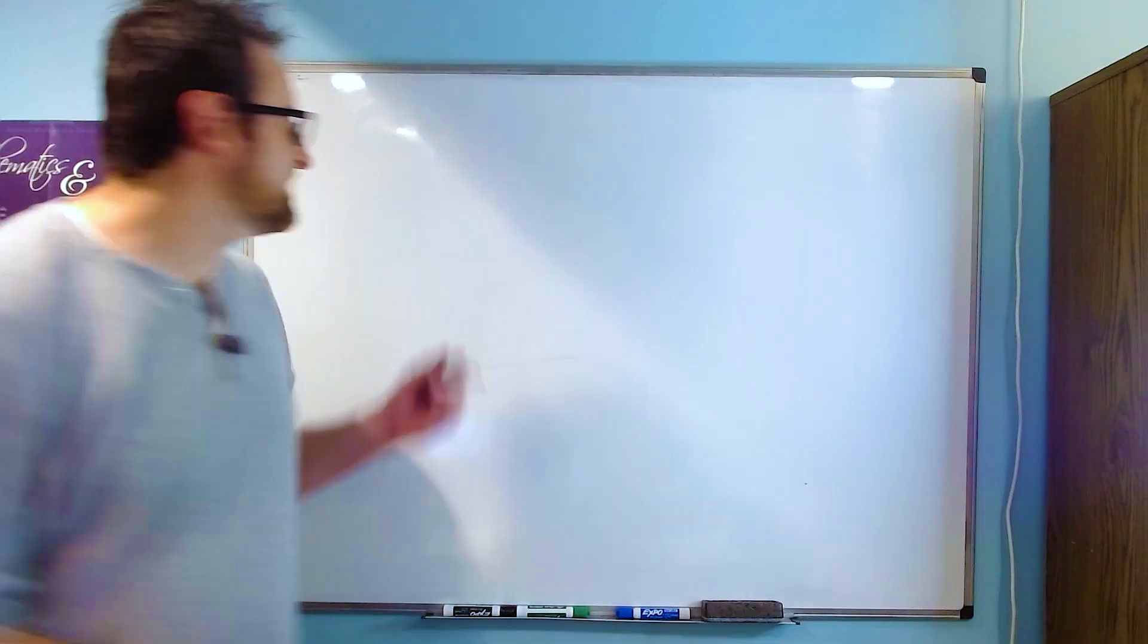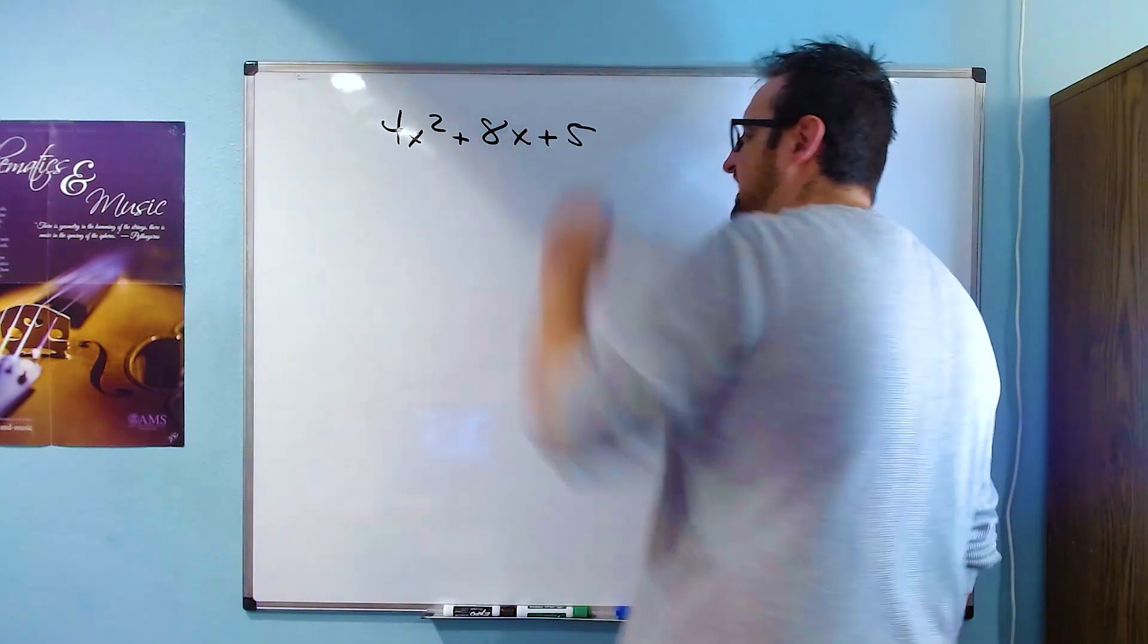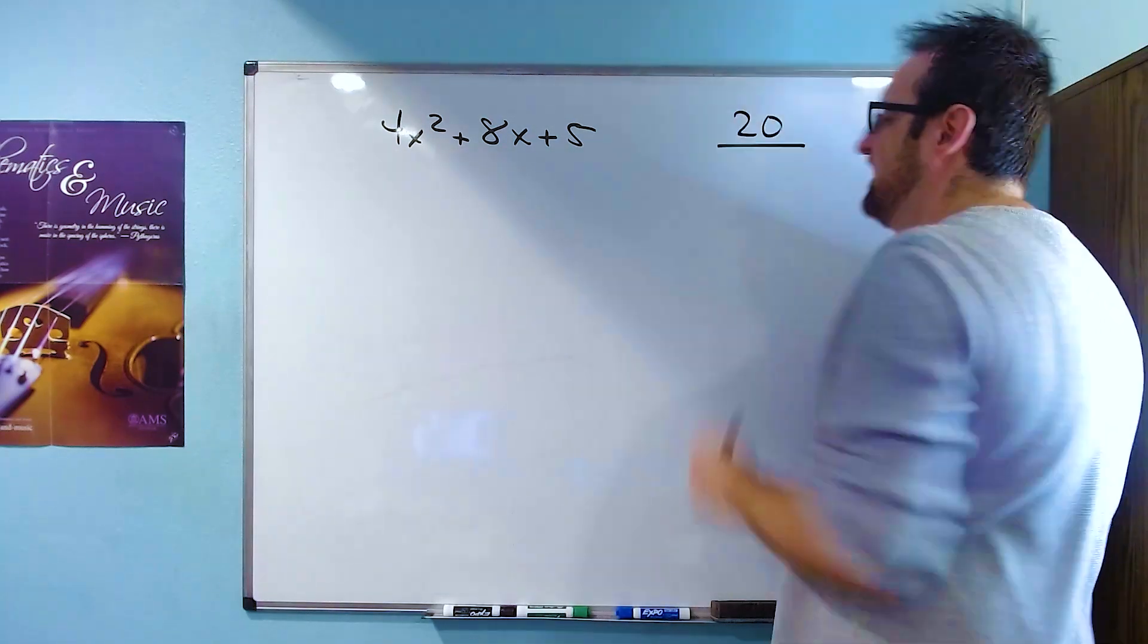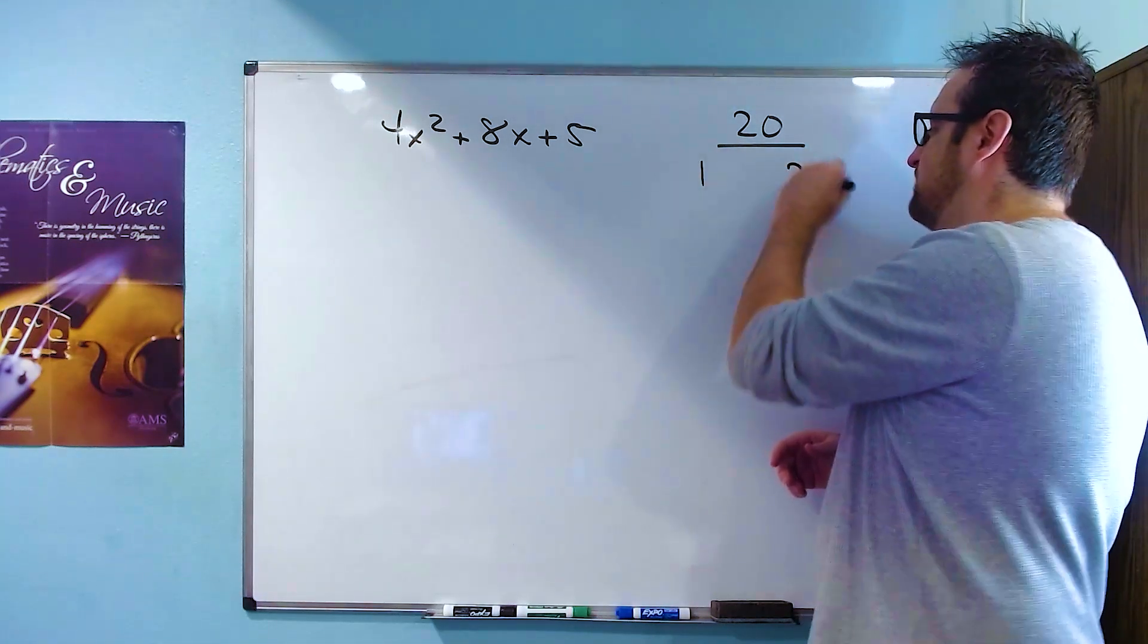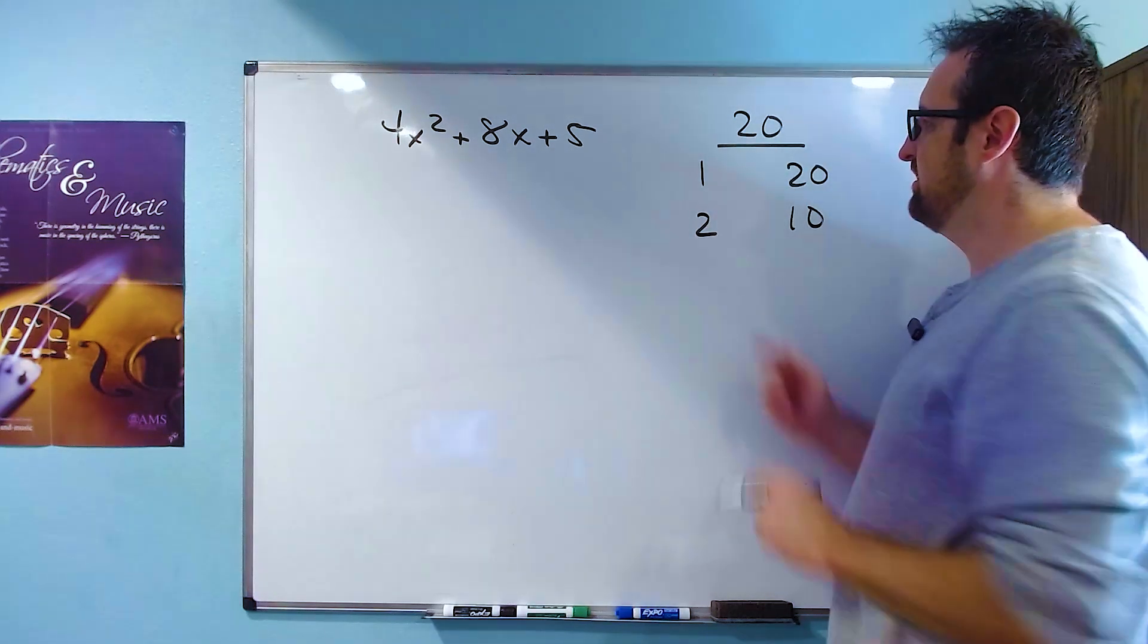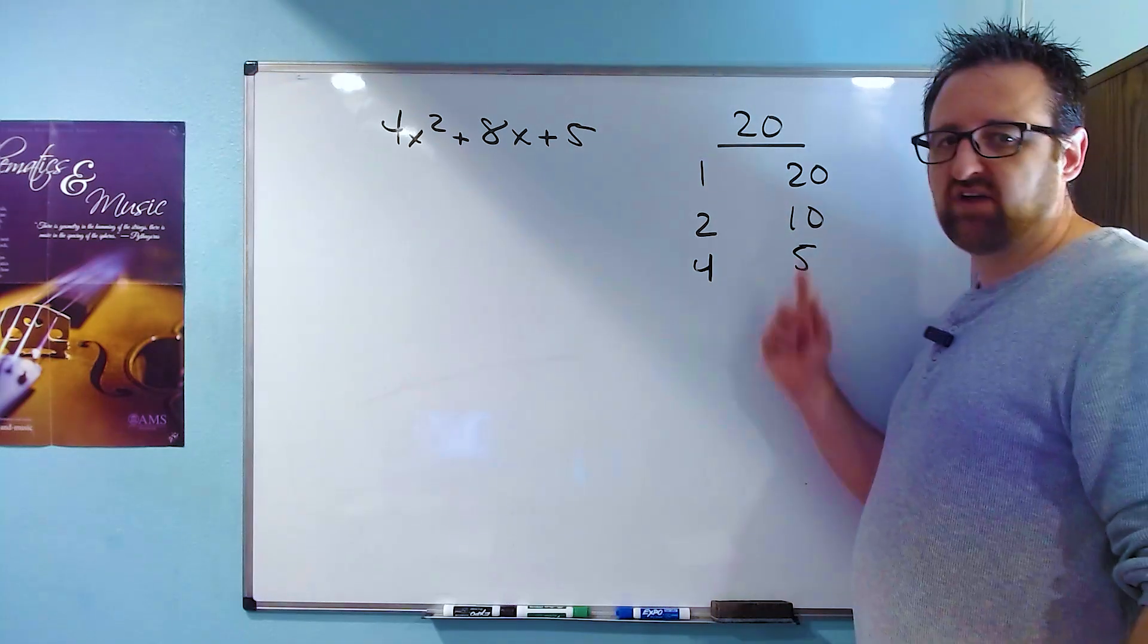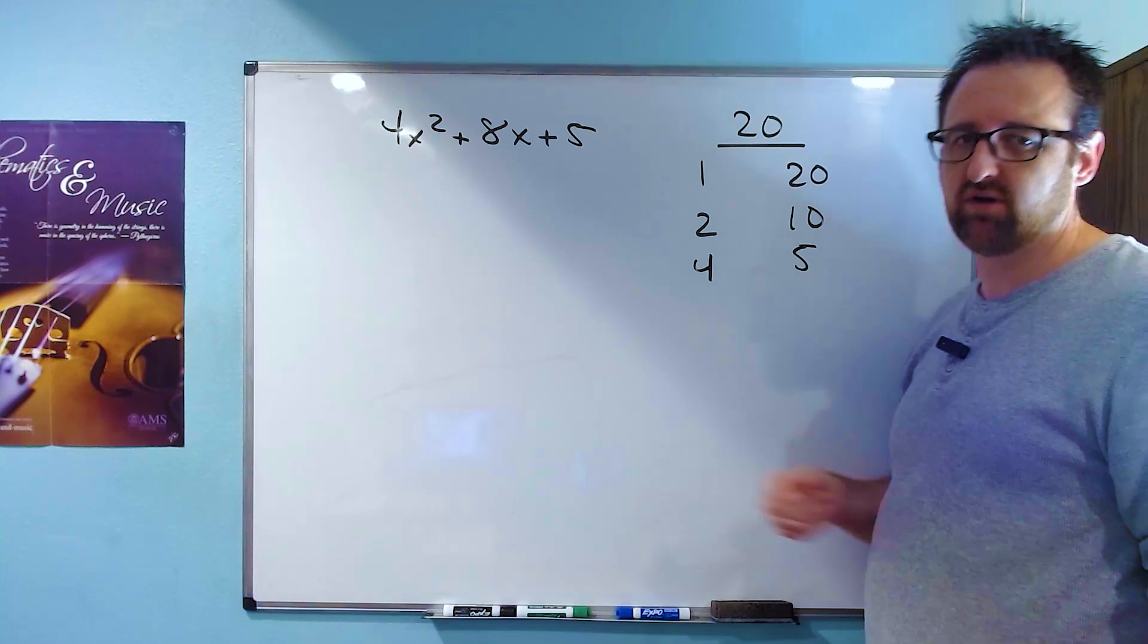Alright. Our last example is 4x squared plus 8x plus 5. So to do this with the AC method, we're going to take the product of the first and last term. So 4 times 5 is 20. And we'll write down all the possible factors of 20. So we do that by counting. We start with 1. 1 and 20 work. They multiply to 20. 2 works. 2 times 10 gives me 20. 20 is not divisible by 3. So 3 won't work. 4 works. 20 divided by 4 gives me 5. So 4 times 5 gives me 20. The next number we try to pick is 5, but it's already listed. So we have all the possible factors.